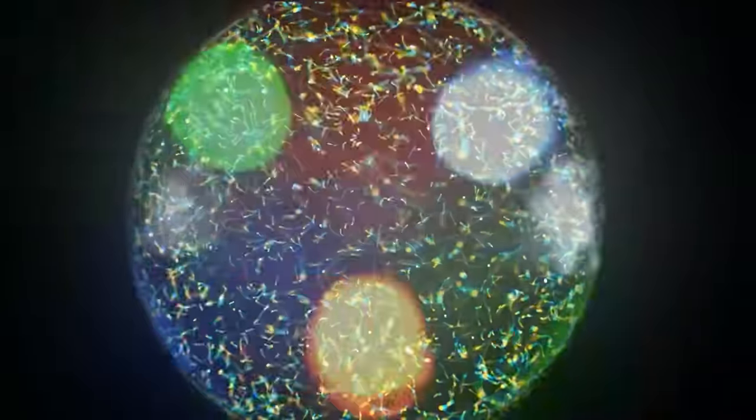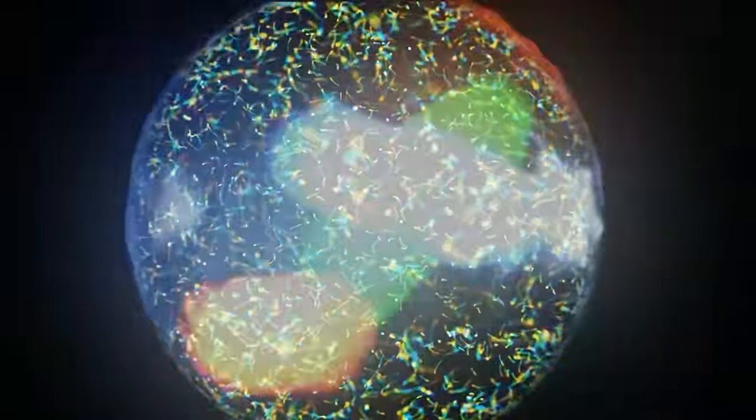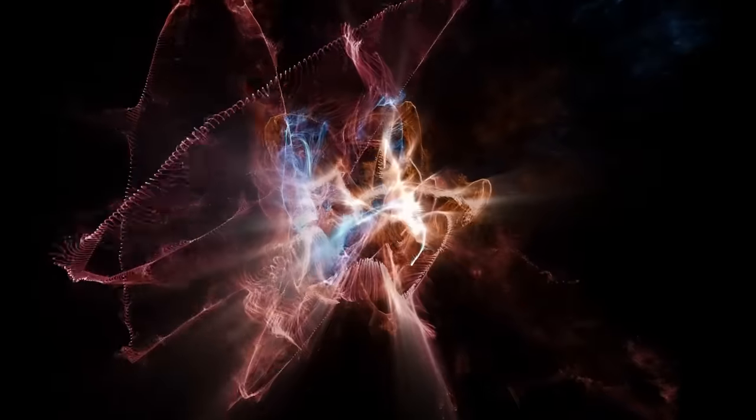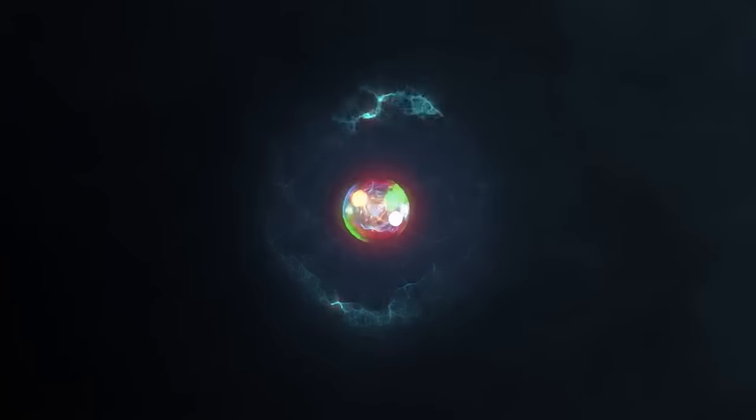First, when charged particles speed up, they shoot out electromagnetic radiation. Now, electrons are charged and zoom around during their orbits. So according to this model, they should be constantly emitting radiation. This would mean they lose energy and quickly spiral inward, eventually crashing into the nucleus.